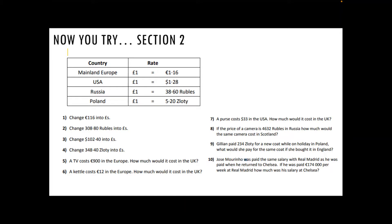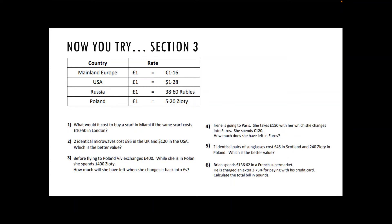For section two there are another 10 questions where we are coming back to pounds by dividing. It's really important that you divide the amount by the exchange rate — for example, 116 divided by 1.16, not the other way around. For section three, you need to decide whether you're going across to a new currency (multiply) or coming back to pounds (divide). There are only six questions in this set as they're a bit harder. Calculators are allowed — let me know if there are any problems in the Teams chat, and I'll see you in the next video.